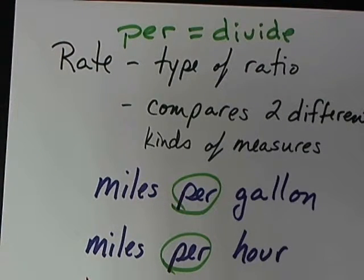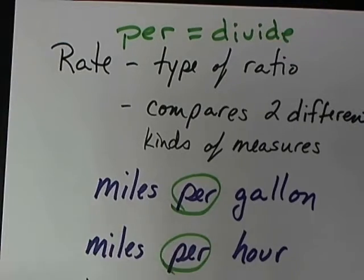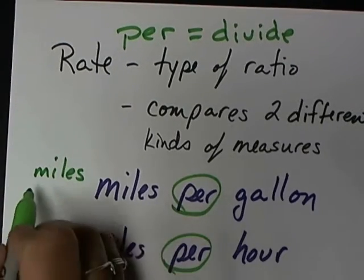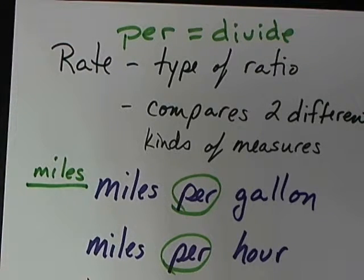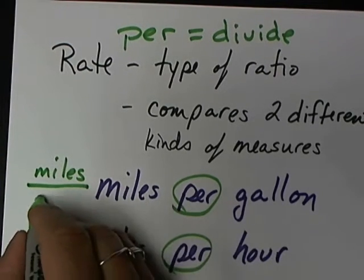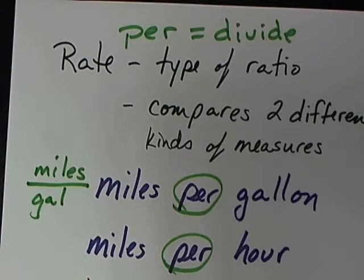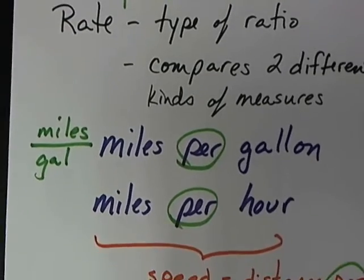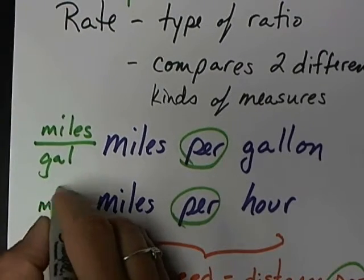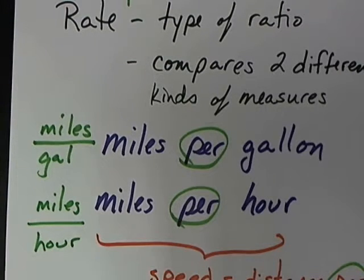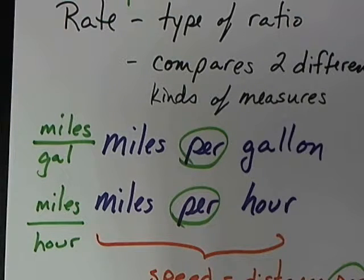So when we're finding miles per gallon, we calculate that by taking the miles and dividing it — that's our fraction bar. Then you put the gallons after. You take the number of miles you've traveled and divide it by the gallons it took you. Same idea for miles per hour: you take your miles and divide by the time it took, your hours. That is how you calculate a rate or any ratio — you read the words.